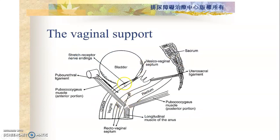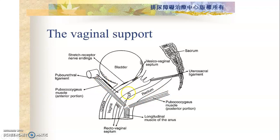We can appreciate here the bladder and the vagina. We have the pubo-urethral ligament, the utero-sacral going posteriorly, the sacrovaginal ligaments anteriorly, and part of the levator ani muscle that supports the vagina. We also have the rectovaginal septum.